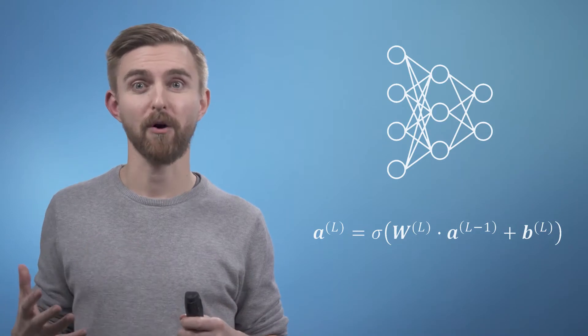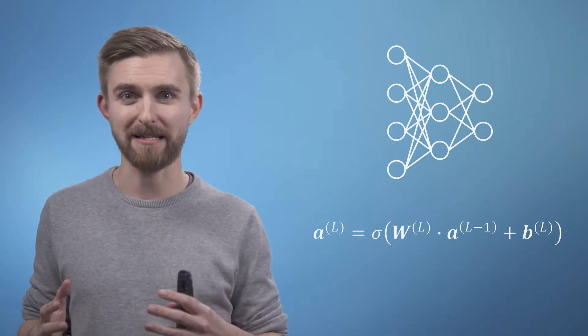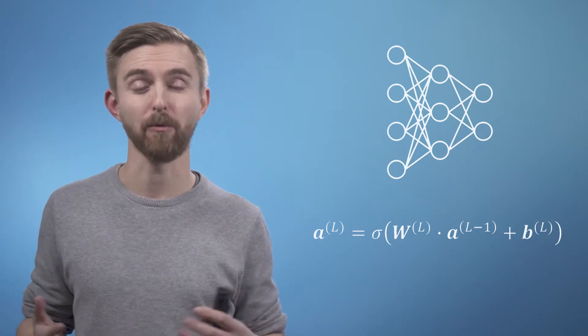Initially we will set all of our weights and biases to be a random number and so initially when we pass some data into our network what we get out will be meaningless.